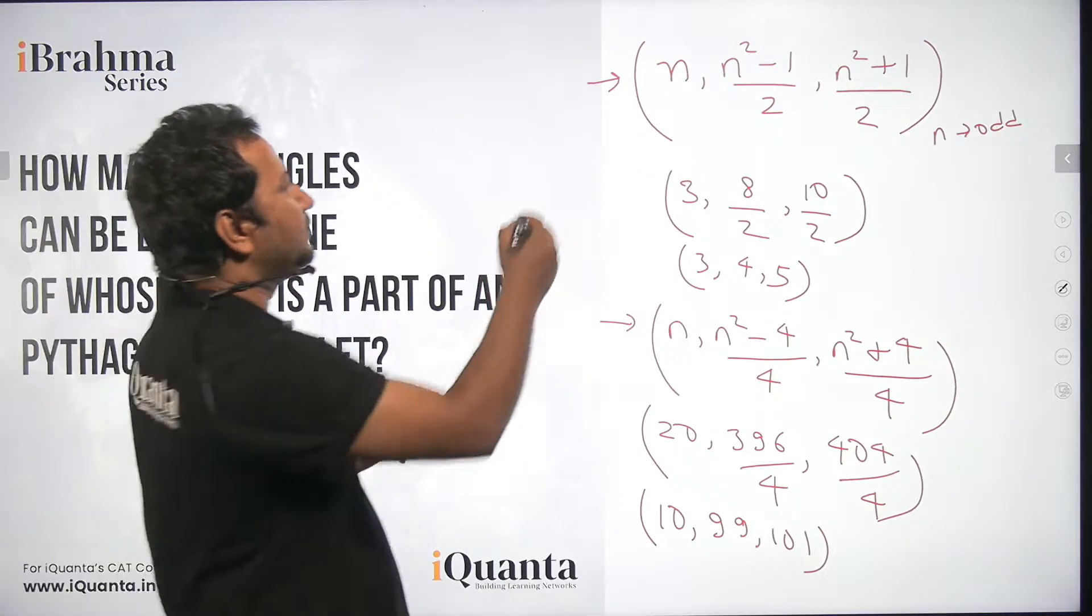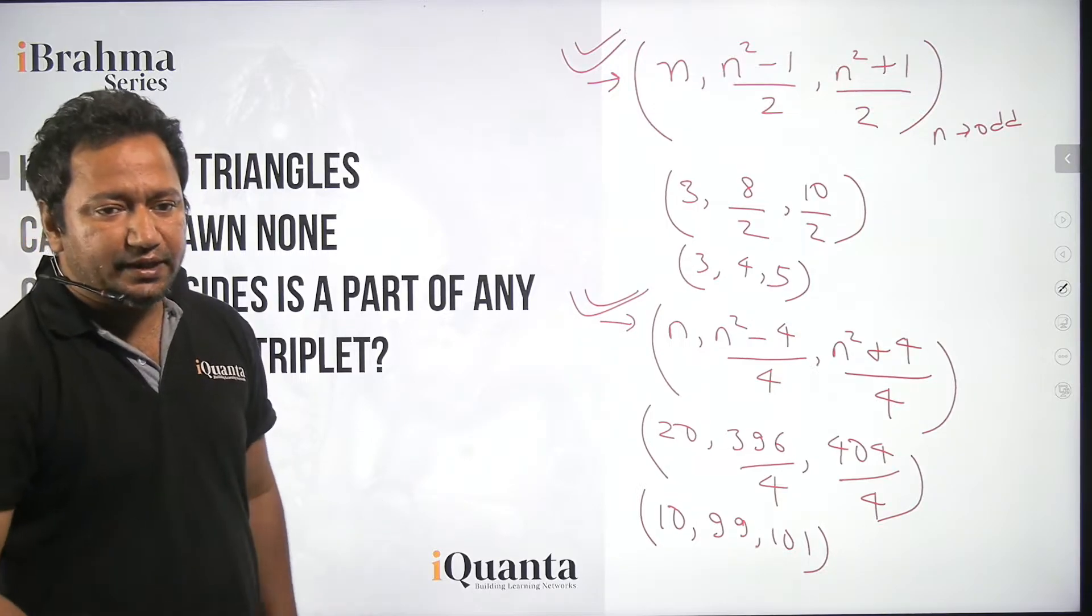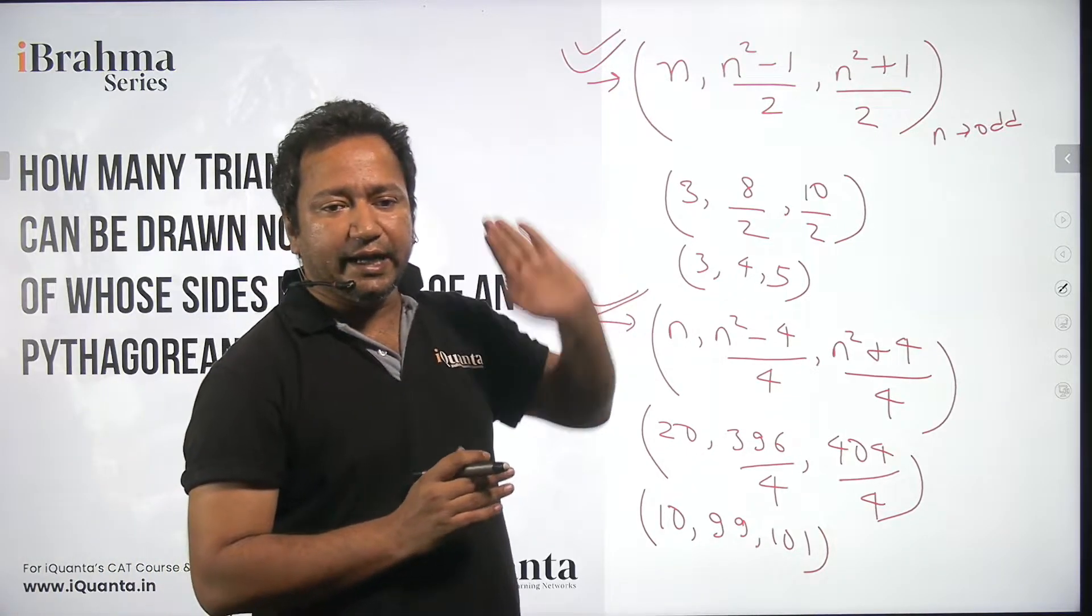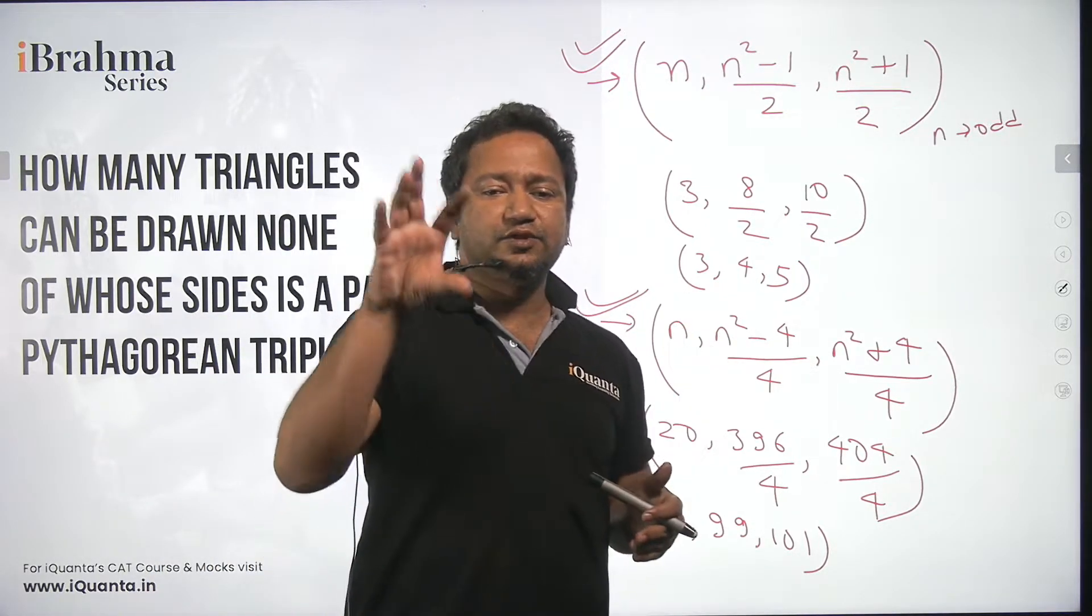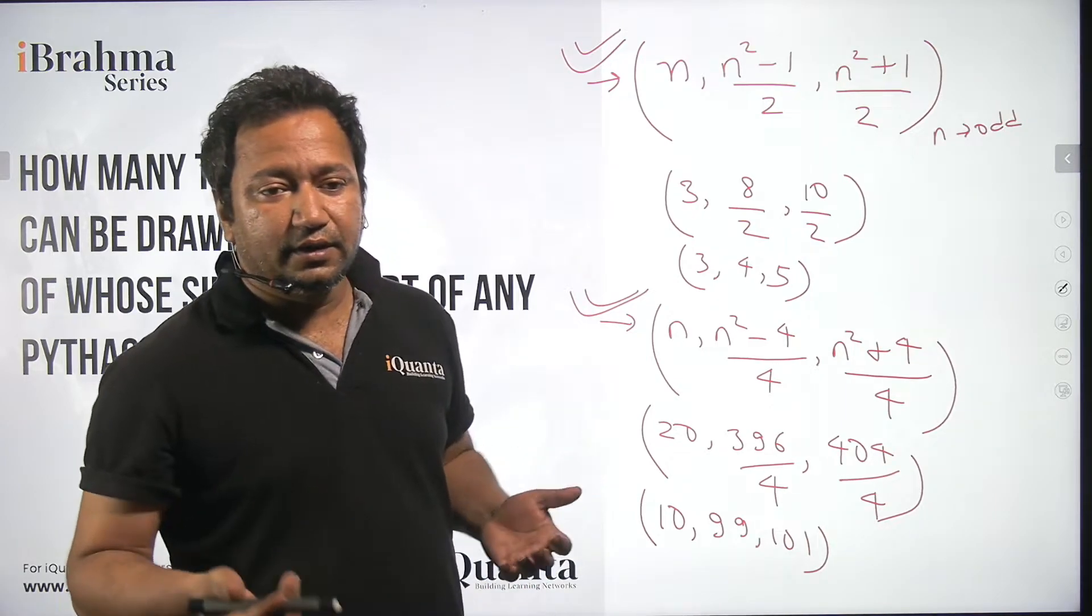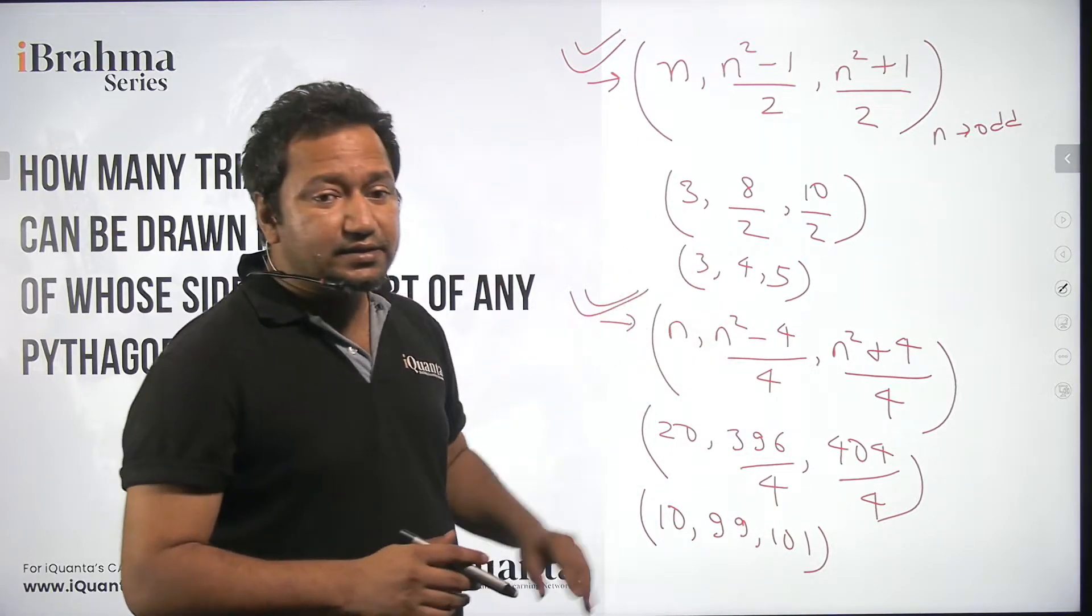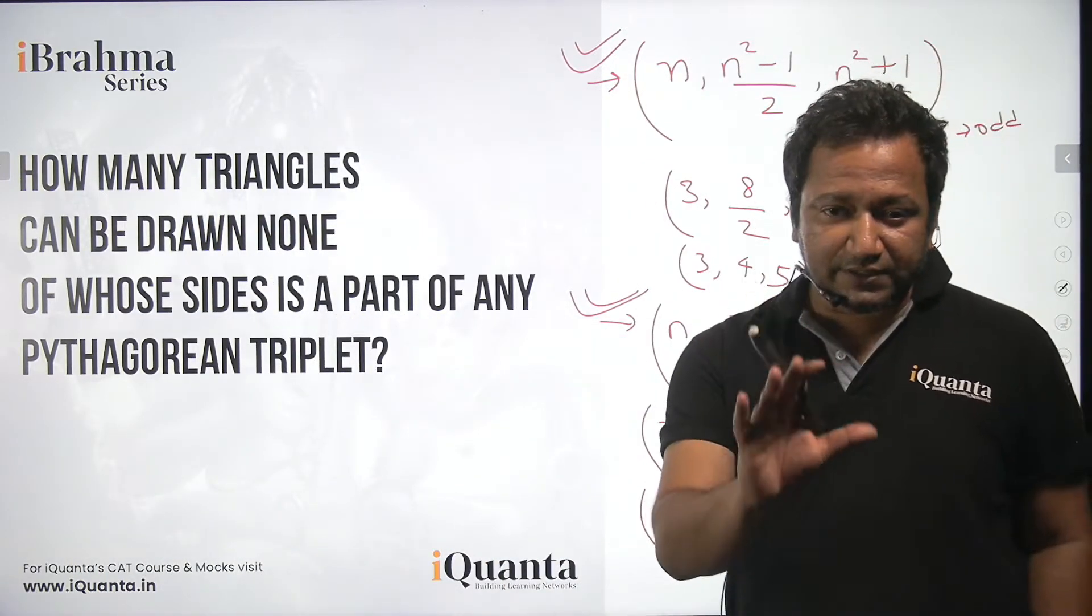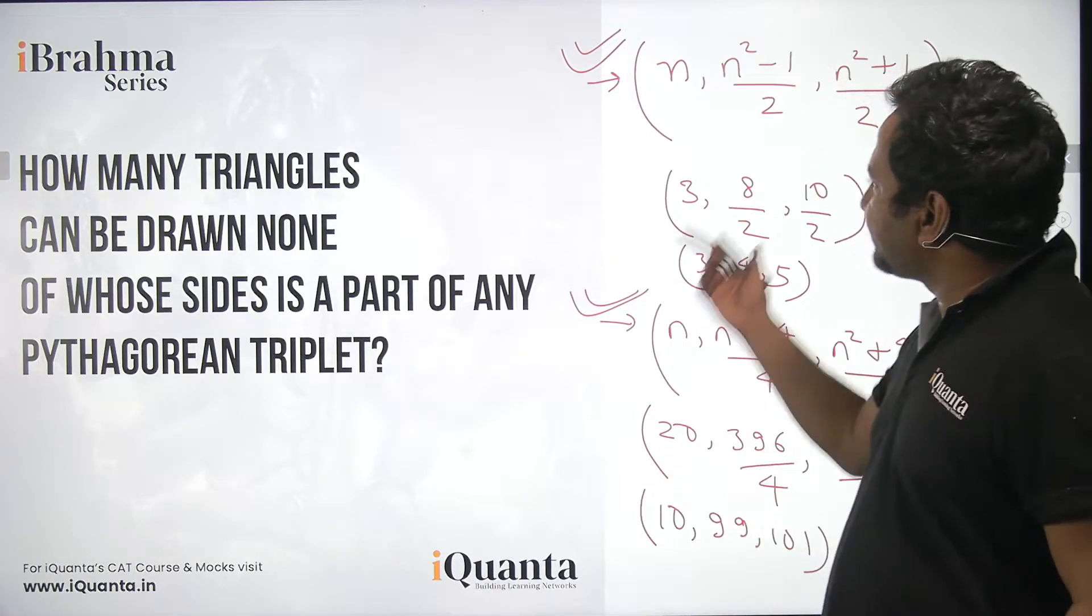And here we have understood that these two formulas are so useful in our lives that we can calculate any Pythagorean triplet just by putting in the values. Now that also means that whatever value we put for n will get a Pythagorean triplet. Now according to the question 3, 4, 5 is a triplet that means we cannot assume any triangle whose sides are either 3 or 4 or 5 or all. Similarly, we cannot consider a triangle whose sides are either 20 or 99 or 101. So now looking at this you might realize that for all the values of n there has to be a Pythagorean triplet. So first of all in the first instance on the face of the equation it looks like there are 0 triangles like that.